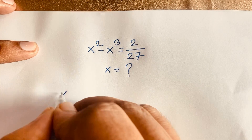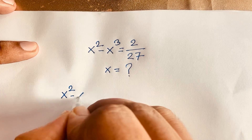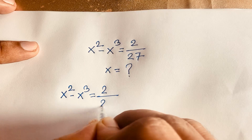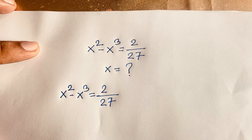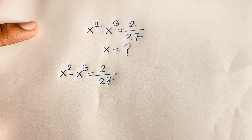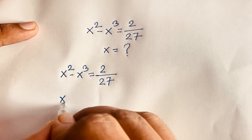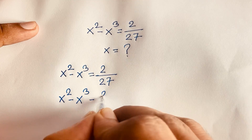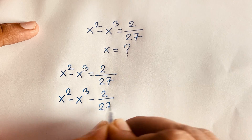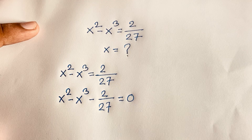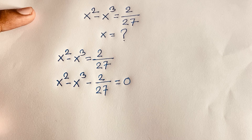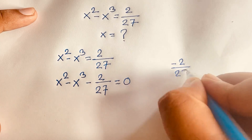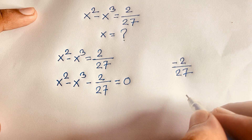Our question is x to the power (x squared minus x cubed) is equal to 2 over 27. I can rewrite this as x to the power (x squared minus x cubed) minus 2 over 27 is equal to 0. I can see here we have minus 2 over 27.